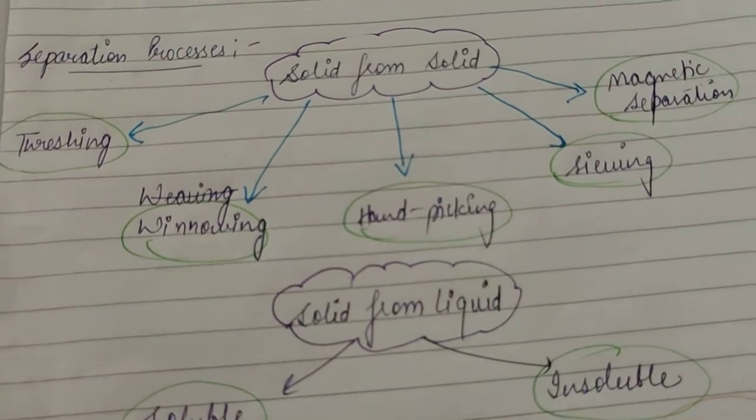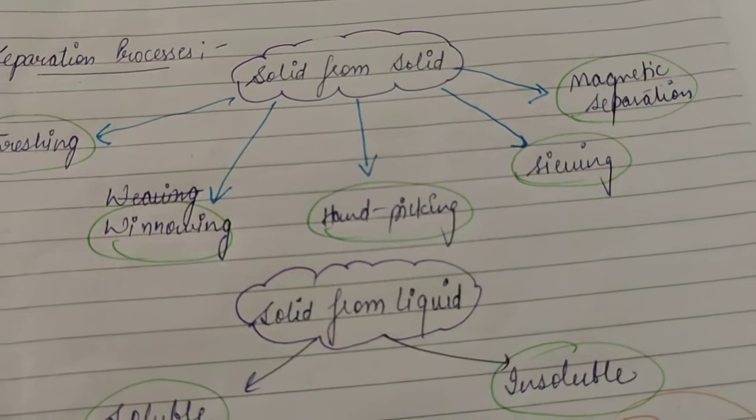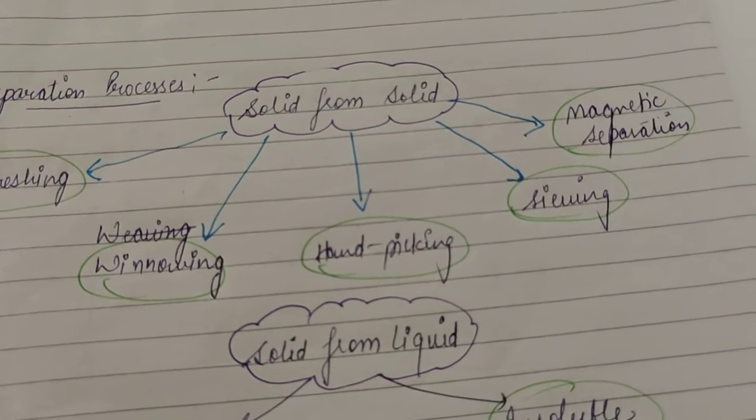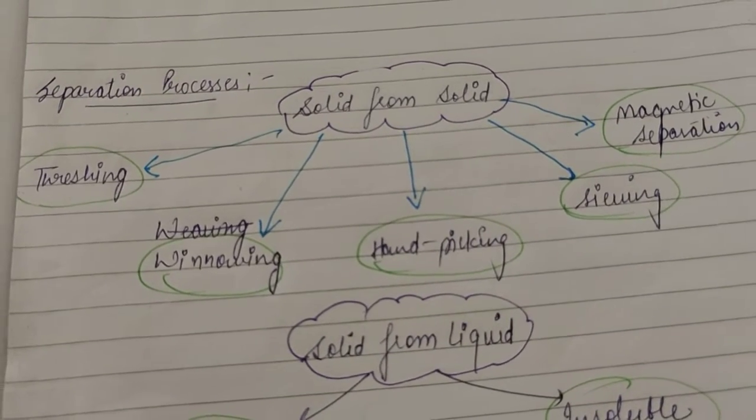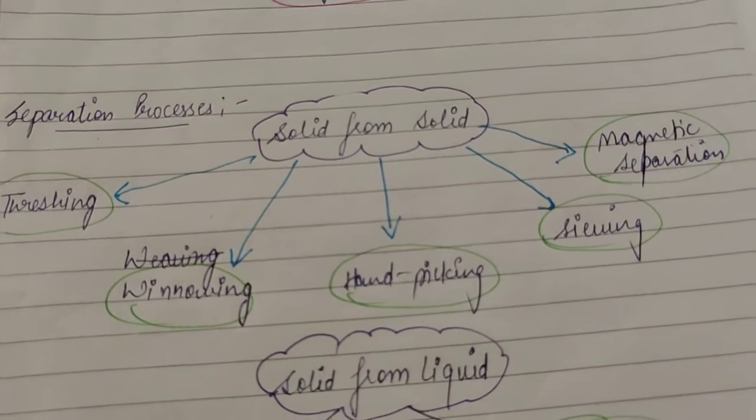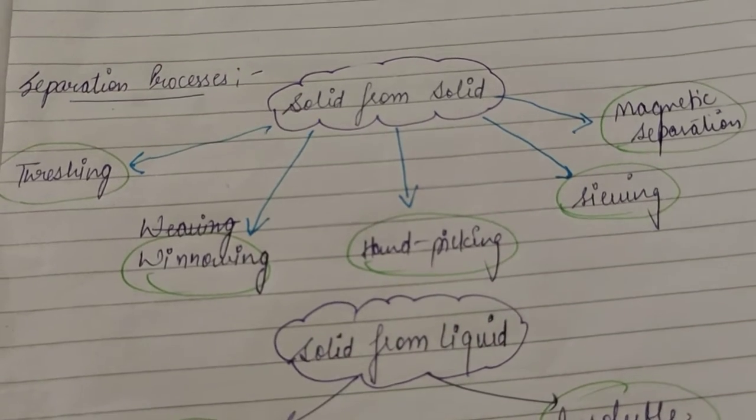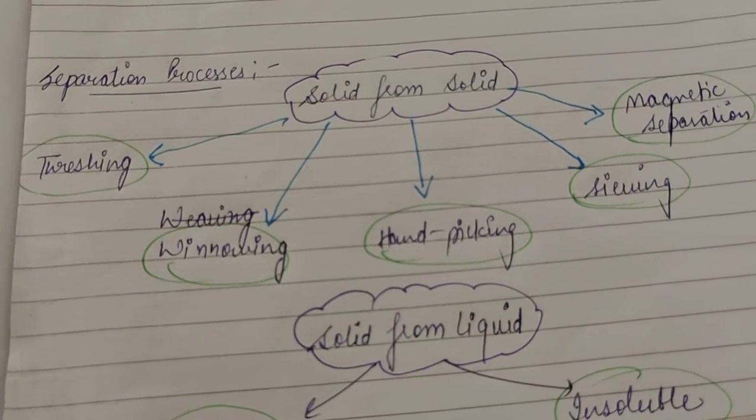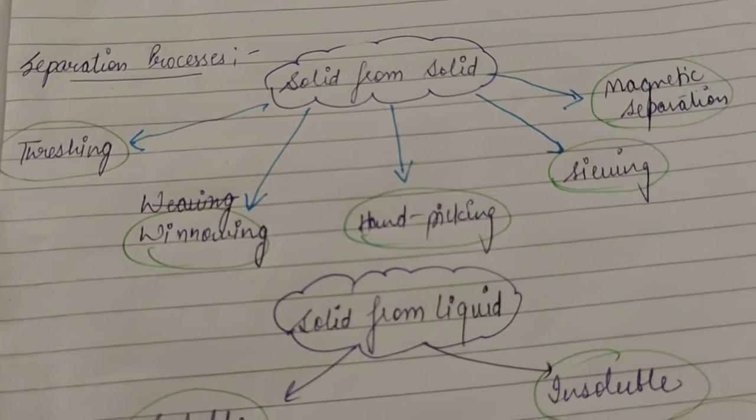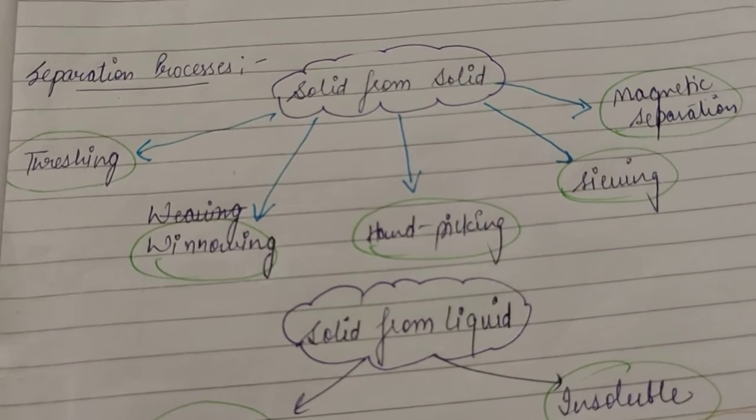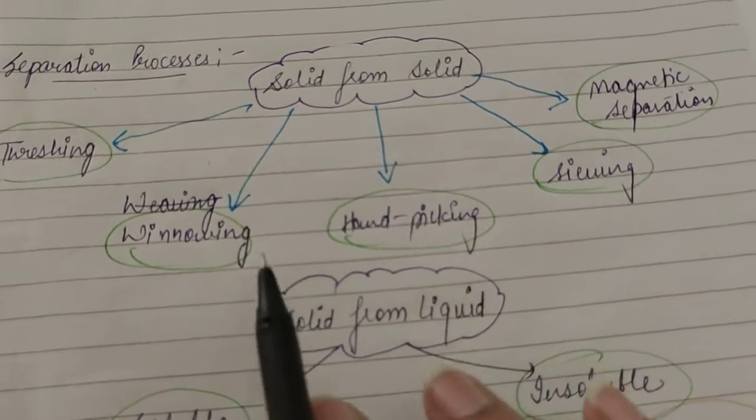Then what is winnowing? Winnowing is when you just separate two substances on the basis of their weight, like lightweight particles. In this, the help of wind or air is taken. If the particle is lightweight, then it will be blown away with the wind, and the heavy particles will be settled down there only. So that is winnowing.